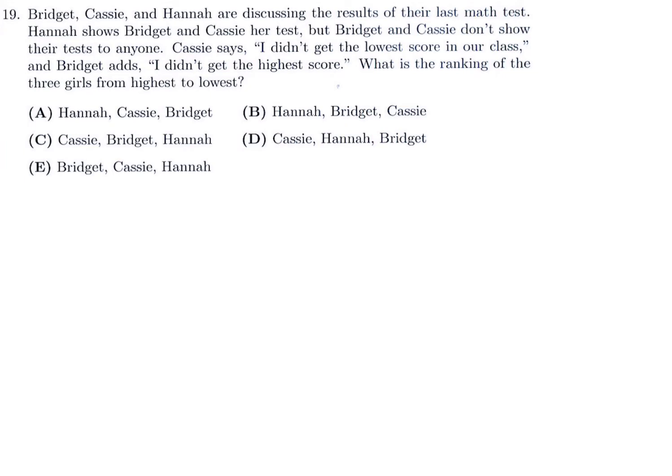Bridget, Cassie, and Hannah are discussing the results of their last math test. Hannah shows Bridget and Cassie her test, but Bridget and Cassie don't show their test to anybody. Cassie says, I didn't get the lowest score in our class. And Bridget adds, I didn't get the highest score. What is the ranking of the three girls from highest to lowest? We have Bridget, Cassie, and Hannah. And Hannah is the only one who actually shows her score. So these two, I guess, they keep their scores a secret or hidden. So both of them get to see Hannah's score. When Cassie sees Hannah's score, she says, I didn't get the lowest score in our class because her score obviously is greater than Hannah's. That's why she can make that conclusion. She looks at Hannah's score and says, well, her score is lower than mine, so I didn't get the lowest score. So that's the first conclusion.